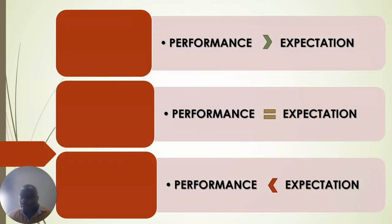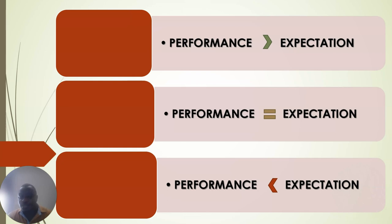In this second part of the series, we are looking at the three basic equations of customer satisfaction. The first equation is when the performance of a service is less than the expectation of the customer.